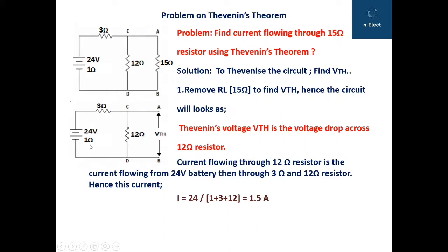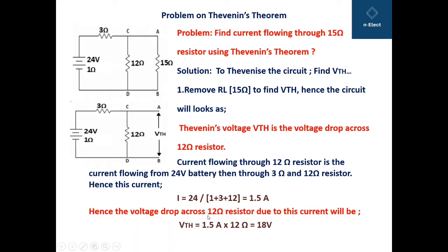This current flows in the circuit. The voltage drop across the 12 ohm resistor, which is VTH, equals the current multiplied by 12 ohm. So VTH equals 1.5 amperes times 12 ohm, which gives 18 volts.